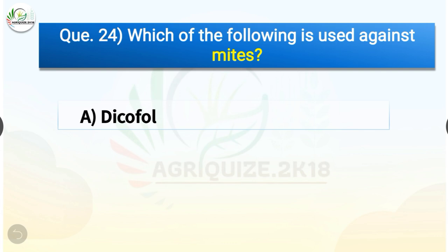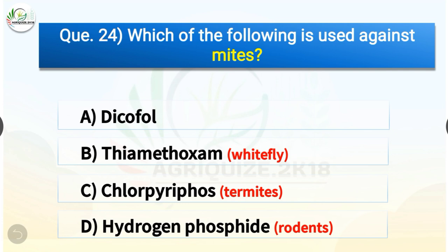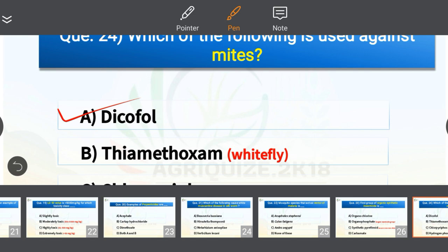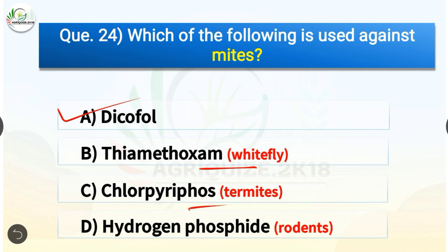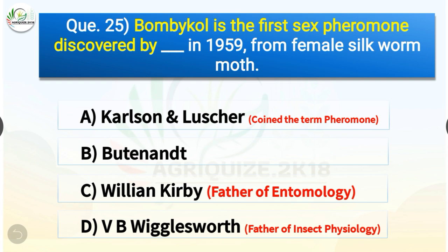Question number twenty-four: which is used against mites? Options are dicofol, thiamethoxam, chlorpyrifos, or hydrogen phosphide. The correct answer is option A, dicofol. Thiamethoxam is used against whitefly, chlorpyrifos is used against termites, and hydrogen phosphide is used against rodents. Question number twenty-five: bombykol is the first sex pheromone discovered by Butenandt in 1959 from female silkworm moth. Carlson and Luscher coined the term pheromone, William Kirby is the father of entomology, and V.B. Wigglesworth is the father of insect physiology.